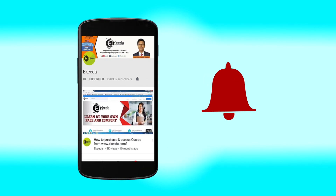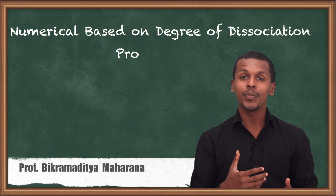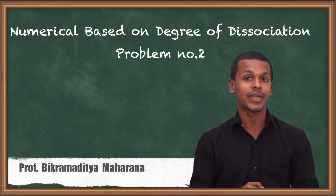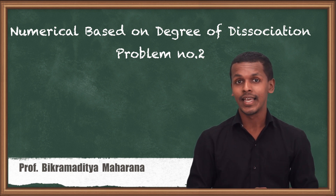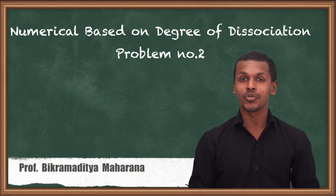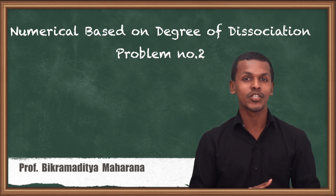Click the bell icon to get the latest videos from Ikeda. Hi friends, now we are going to do the second numerical which is based on the degree of dissociation. In the previous lecture we also created a numerical based on that, but based on a weak base. Now we are going to do a degree of dissociation numerical which is based on a weak acid.